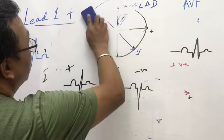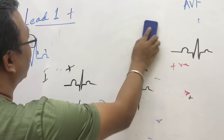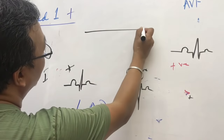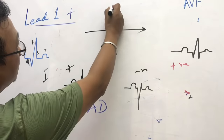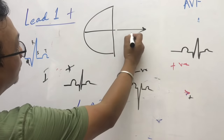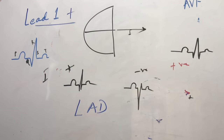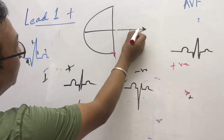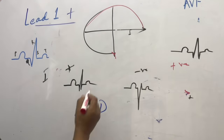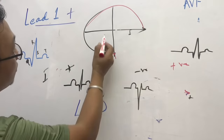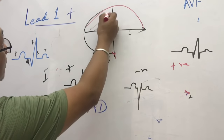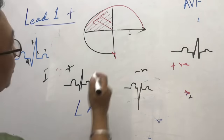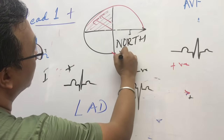Sometimes people ask: what happens if lead 1 is negative and AVF is also negative? Though this is very rare, you must know it. If lead 1 is negative and AVF is negative, the common part points in the opposite upper-left direction. This is called the northwest axis.